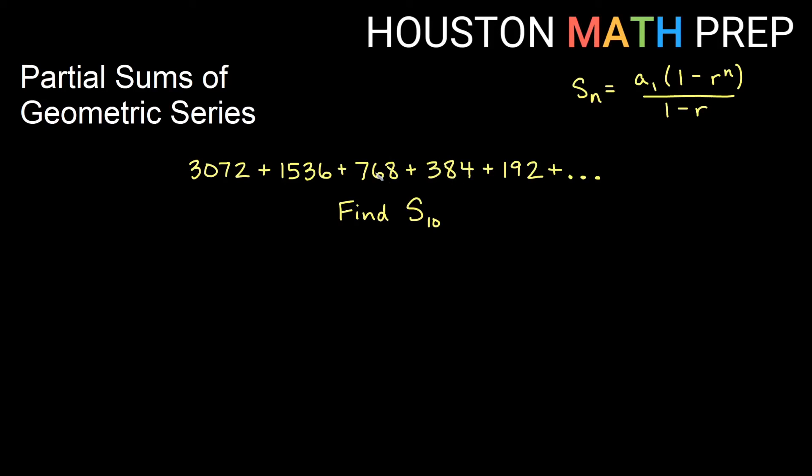384 divided by 768 will give you a half. 192 divided by 384. So my ratio here is positive half. My first term, obviously, is 3072.